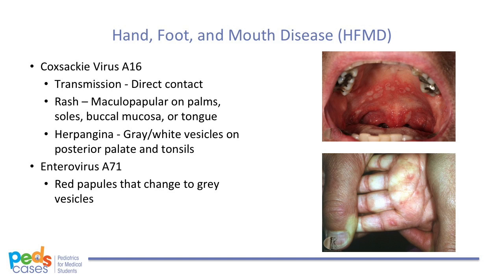Enterovirus A71 can also cause hand, foot, and mouth disease, presenting with fever, anorexia, malaise, sore throat, and oral lesions one to two days later. These oral lesions are vesicles on an erythematous base, which ulcerate and are very painful. The cutaneous lesions are red papules that change to gray vesicles, 3 to 7 millimeters in size, and can affect the palms and soles. Most cases of hand, foot, and mouth disease are self-limiting within one week. Treatment is symptomatic therapy with hydration, pain control, and antipyretics.